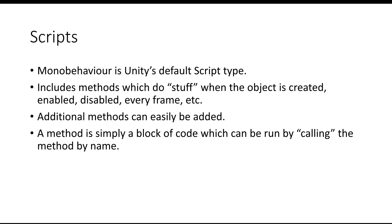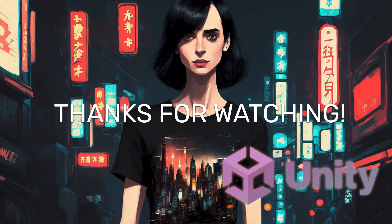You can easily add additional methods to your game objects, which is obviously very useful. For those who don't know, a method is just a block of code that can be run by calling the method by its name. For example, if you had a method called 'hello world,' when you type 'hello world' into a script you can get it to do whatever is contained within that method — which for most game programmers usually means just writing 'hello world' somewhere on the screen or in the console. That's all a method is: it's just a function or a block of code that you can run on its own simply by invoking it by name.